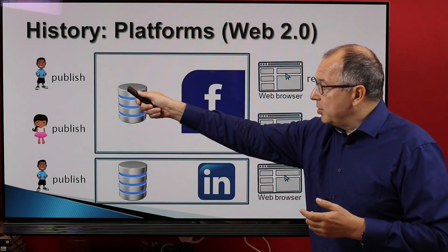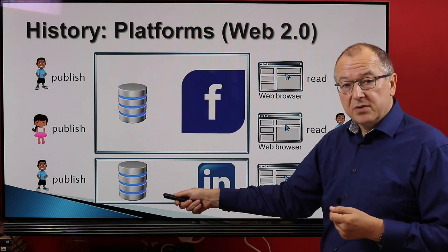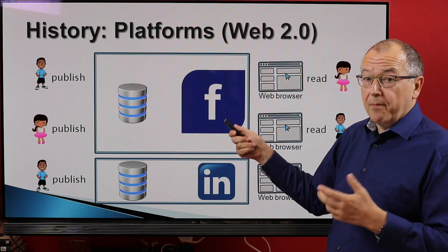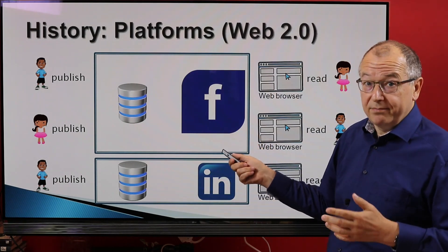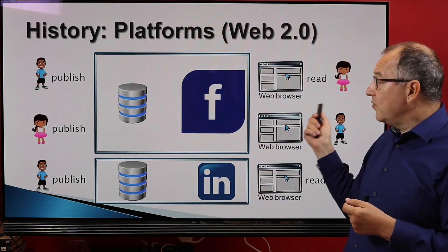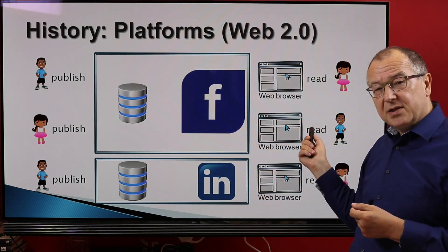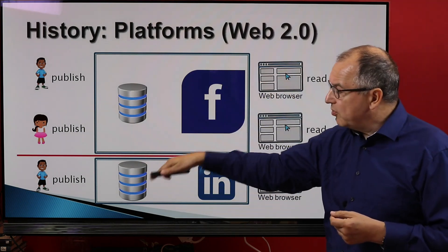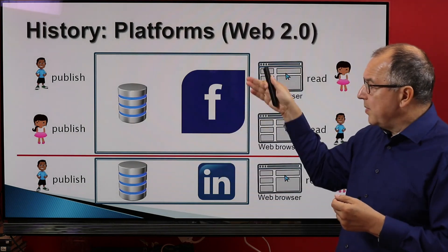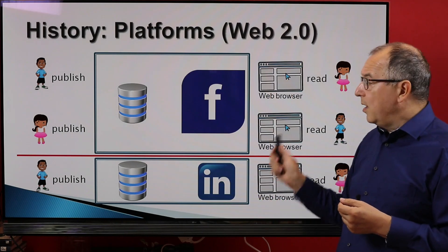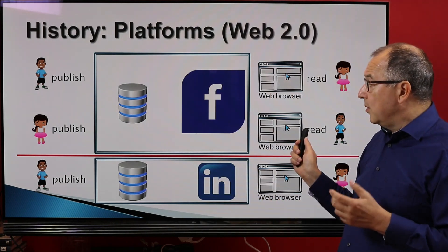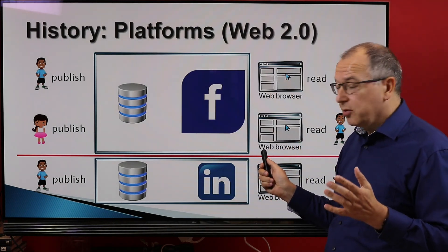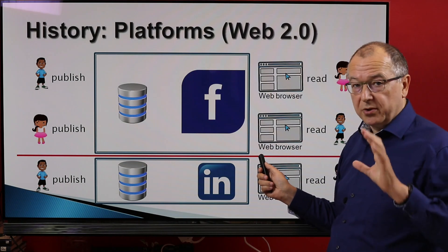People have to publish on different platforms — they cannot publish just once. They can also be banned, like Mr. Trump was. And for people, it's sometimes inconvenient because you cannot communicate from one platform to another — you can't send a message from here to there. Platforms bring a lot of other issues, as you know.